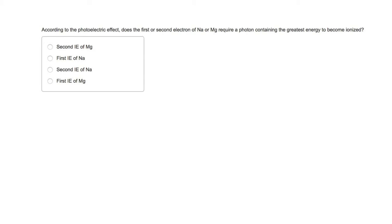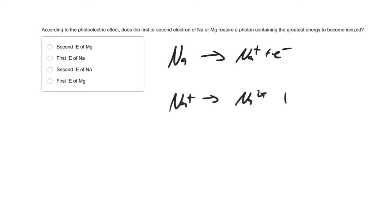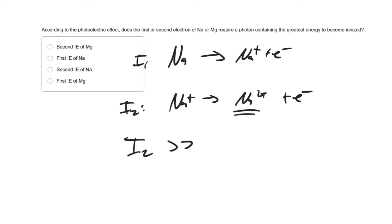This tricky question relates to the photoelectric effect — a photon carries energy to cause ionization of an atom. It asks which ionization, the first or second of sodium or magnesium, requires the photon to contain the greatest energy. For sodium: Na → Na⁺ + e⁻ is I₁; Na⁺ → Na²⁺ + e⁻ is I₂. I₂ is always greater than I₁ for any element, but I₂ is a lot higher than I₁ for sodium because we go from removing a 3s electron to removing a 2p core electron — about 10 times higher.